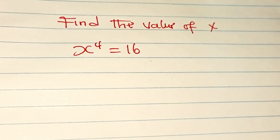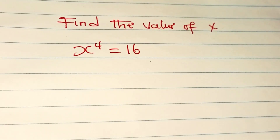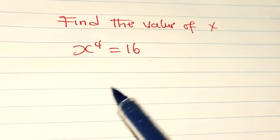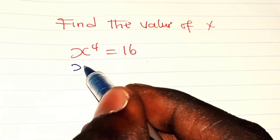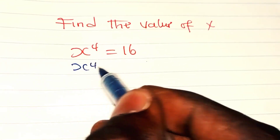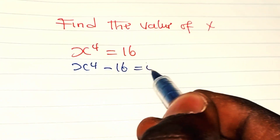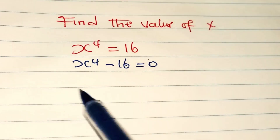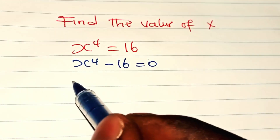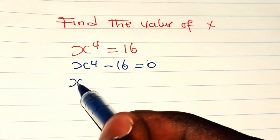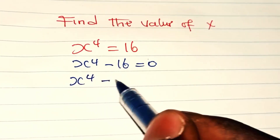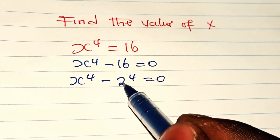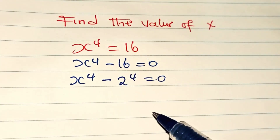So, we have x to the power of 4 is equal to 16. What we are to do here is bring 16 to the left side: x to the power of 4 minus 16 is equal to 0. We can rewrite this as x to the power of 4 minus 2 to the power of 4 is equal to 0, because 2 to the power of 4 is equal to 16.